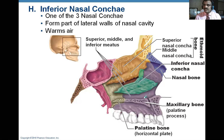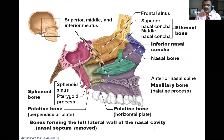The other name for the conchae is turbinates — superior, middle, and inferior turbinate. Looking at a magnified image of surrounding bones around the inferior nasal concha, different colors have been used to differentiate the bones. Frontal has a different color, ethmoid has a different color, nasal bone has a different color, and you can also see the nasal septum, the maxillary bone, the sphenoid bone shown in pink, and the palatine bone.